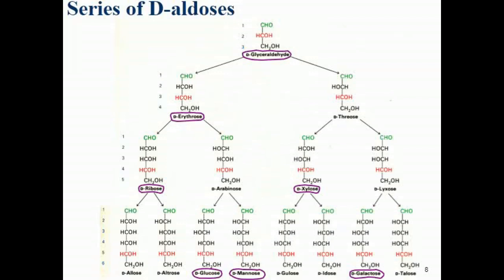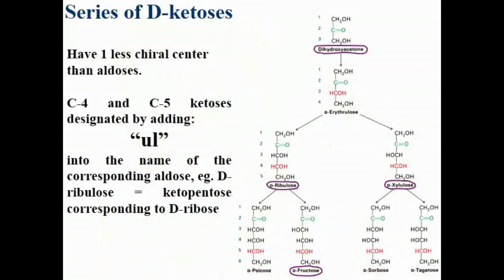Epimers are two sugars that differ only in the configuration around a single carbon. For example, glucose and mannose differ at carbon number two — in glucose the OH is on the right, in mannose it is on the left. These are epimers at C-2. Ketoses have one fewer chiral center than their corresponding aldoses because the ketone carbon itself is not a chiral center.